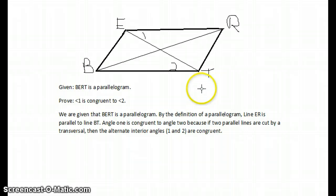Angle 1 is congruent to angle 2 because if two parallel lines are cut by a transversal, then their alternate interior angles are congruent.